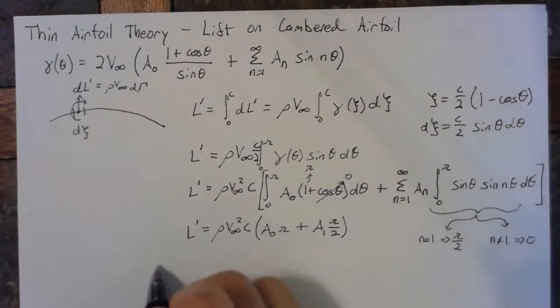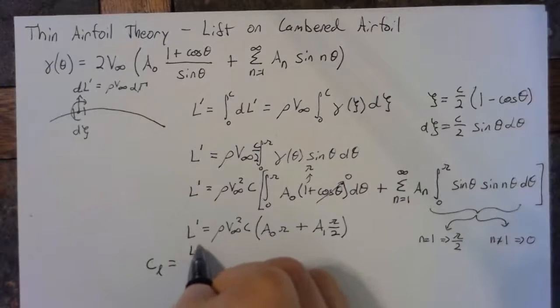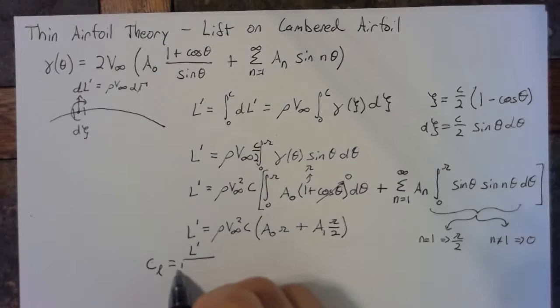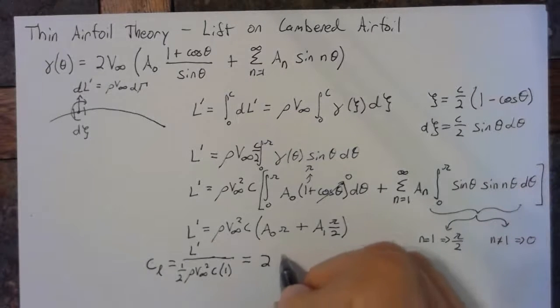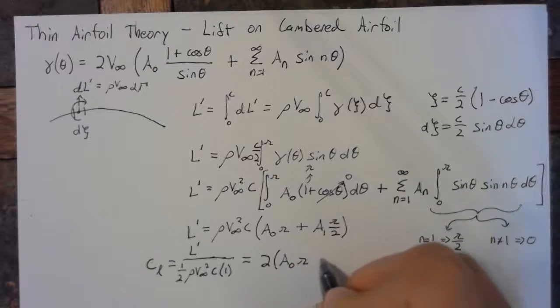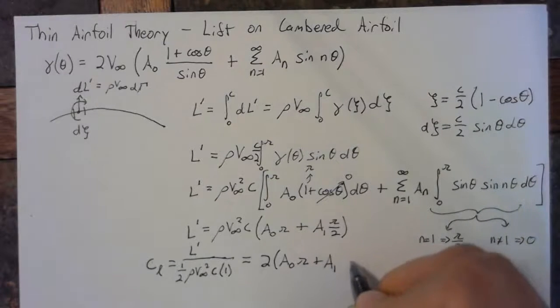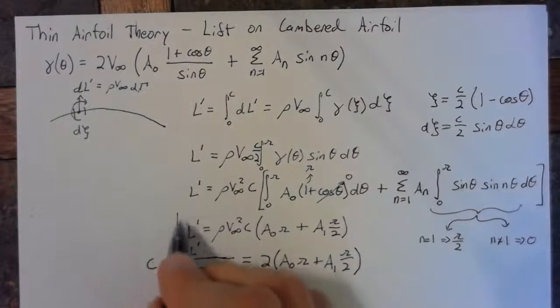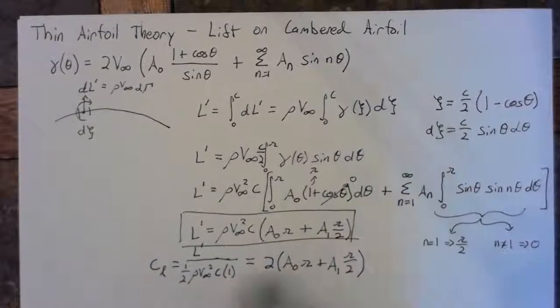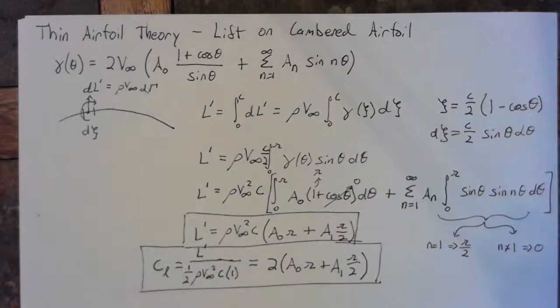And we typically like to think of things in coefficients. So let's look at the lift coefficient, which is simply the lift per unit span divided by 1 half rho v infinity squared times our surface, which is c times a unit span. And this is simply equal to 2 times a0 pi plus a1 times pi over 2. So this is our lift per unit span, and this is our lift coefficient for our cambered airfoil.